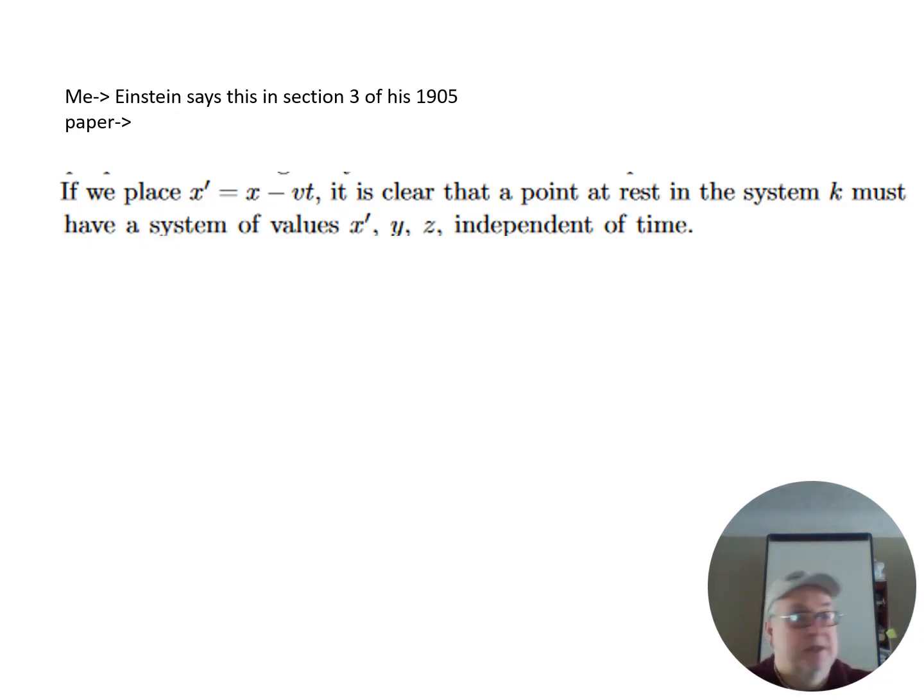Einstein says in his section 3 of his paper of 1905: If we place x' = x - vt, it is clear that a point of rest in the system k must have a system of values x', y, z independent of time.